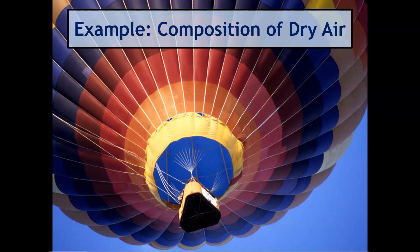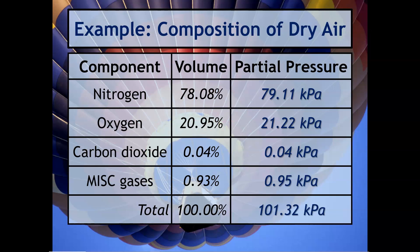Here's an example — look at dry air. Air has a mixture of nitrogen, oxygen, carbon dioxide, and some other small traces of miscellaneous gases. You can see the percentages, and then notice that the partial pressures all add up to 101.3 kPa, which is the pressure right at sea level.